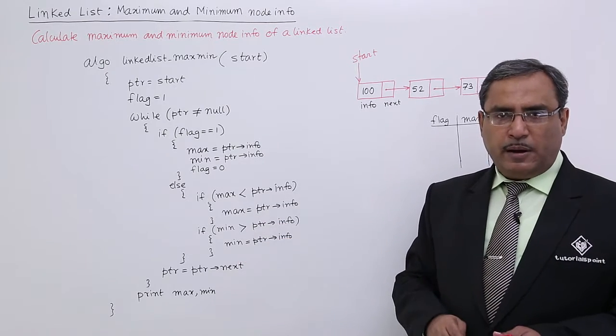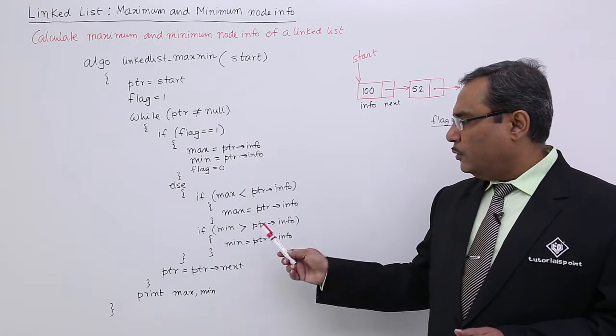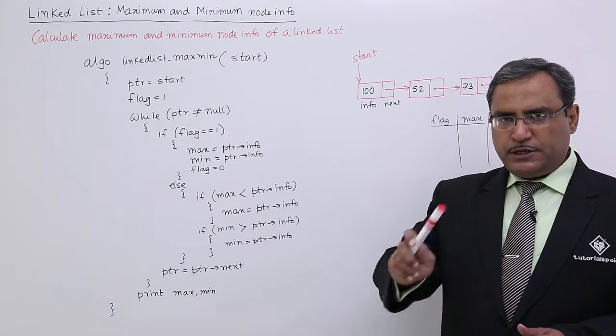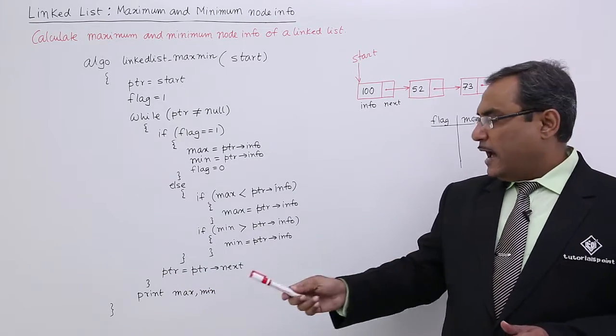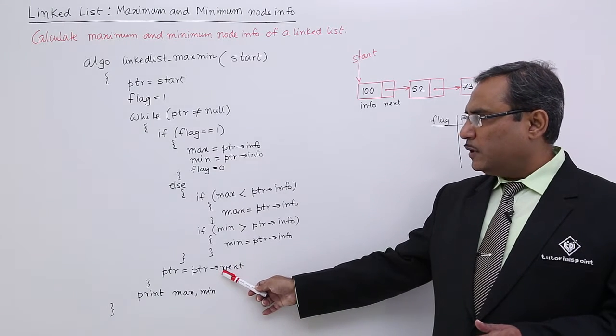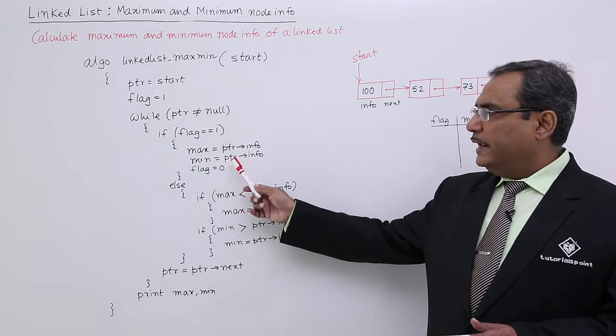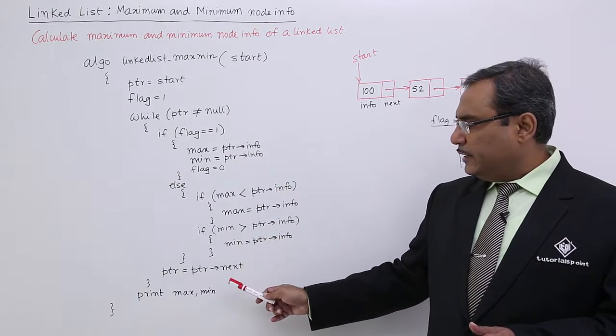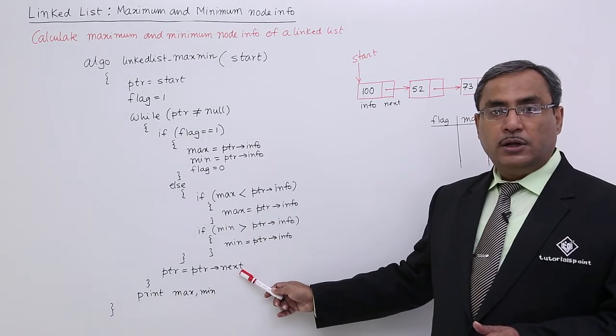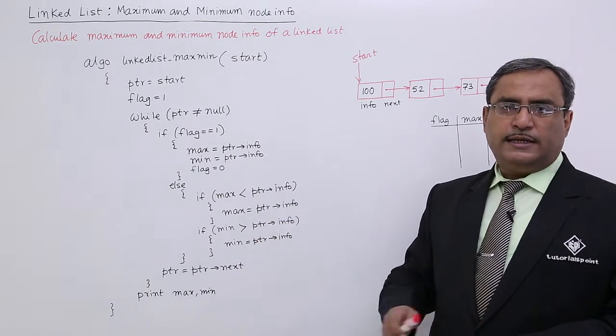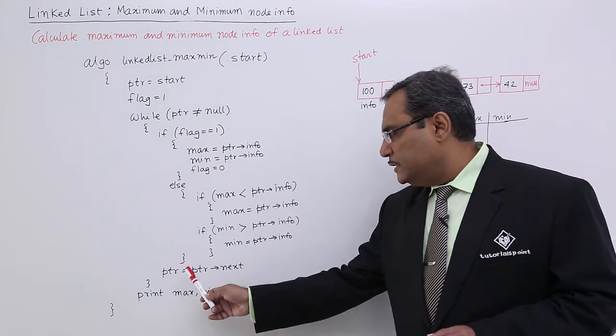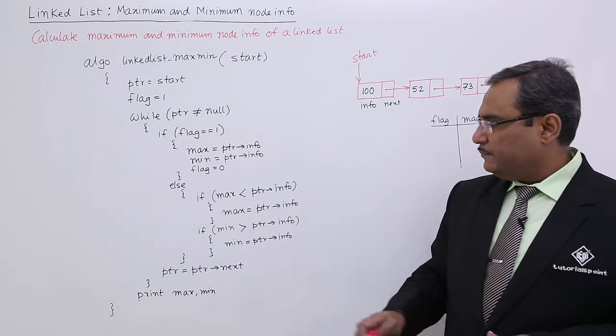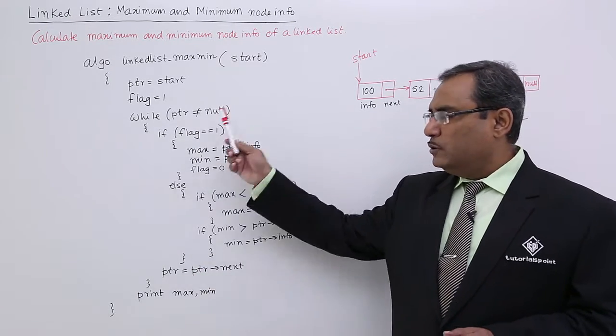And ptr is equal to ptr->next—obviously ptr should get some advancement. You see here I have written this one not within the then part or else part—I have written this within the while construct. So whatever condition is getting true or false, irrespective of that, ptr = ptr->next will go on executing for each and every iteration.